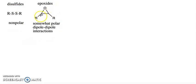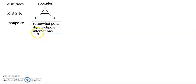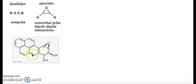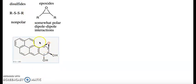Epoxides are three-membered ring ethers — an ether in a three-membered ring — and just like regular ethers, you get dipole-dipole interactions between the oxygen and the carbons they're bonded to. Epoxides tend to be reactive intermediates used in making other compounds, not usually the final product. However, aromatic epoxides like this one are among the carcinogenic byproducts of cigarette smoke, and it is this epoxide that makes it particularly mutagenic.